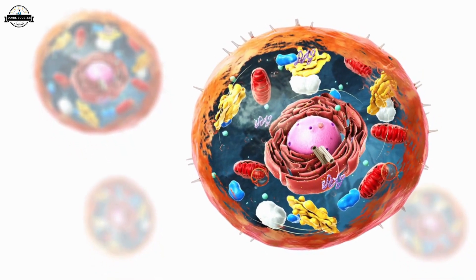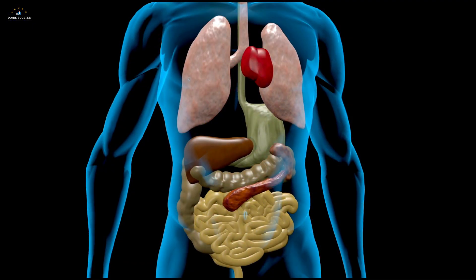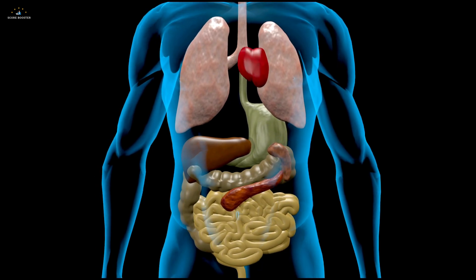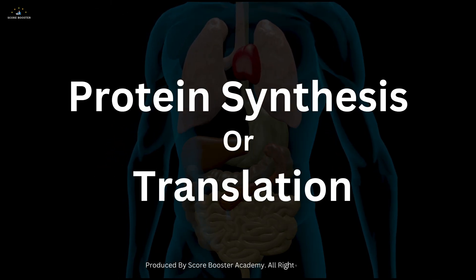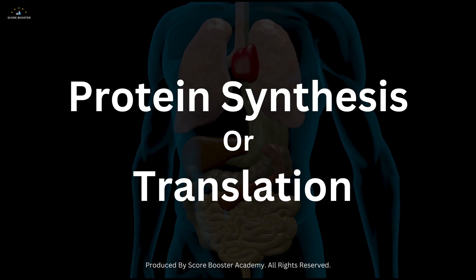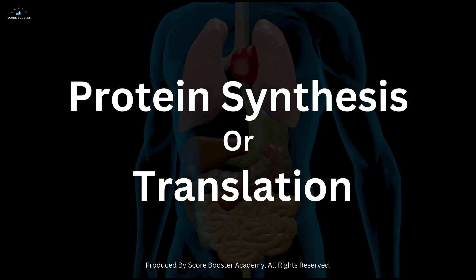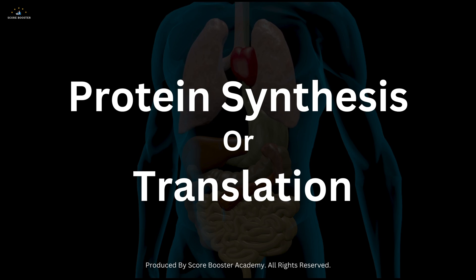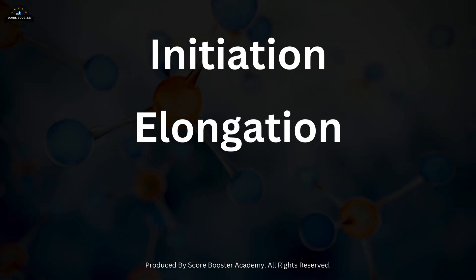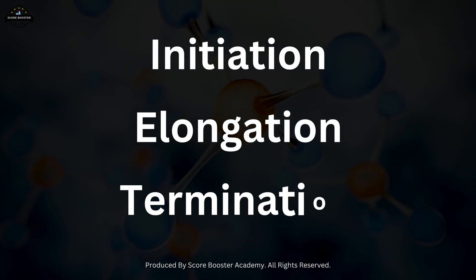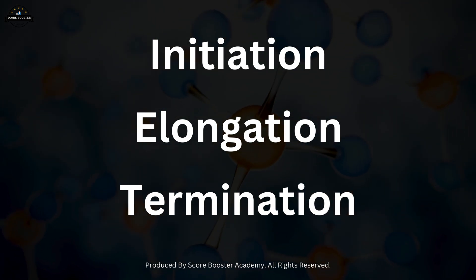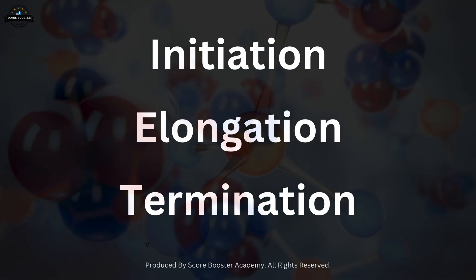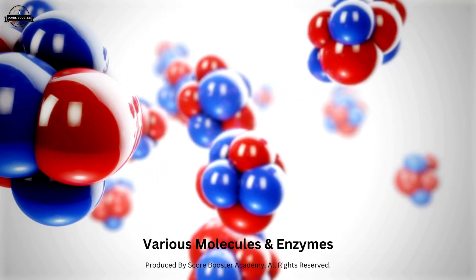Have you ever wondered how our cells know how to build the proteins that keep us alive? This intricate process is called protein synthesis, or translation, and it's one of the most fascinating and vital functions within every living organism. Translation is divided into three main phases: initiation, elongation, and termination. Each of these stages involves a series of precise and coordinated steps, facilitated by various molecules and enzymes.